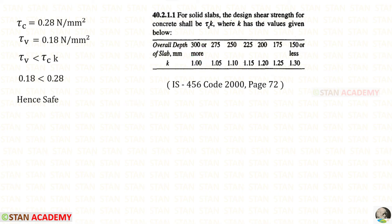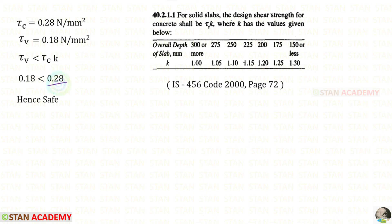Therefore tau C into K equals 0.28 into 1, giving 0.28. Since tau C·K is greater than tau V, the section is safe under one-way shear.